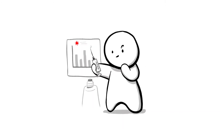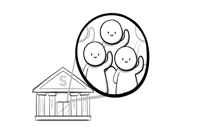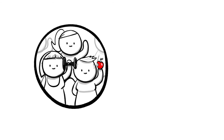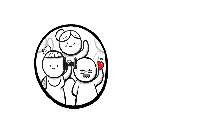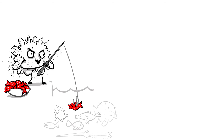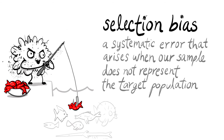Imagine you're testing a new vaccine to fight a deadly virus. You gather a sample of human volunteers from your local university. If they all happen to be healthy men in their twenties, then this could systematically skew the results. Maybe the vaccine is less effective in women or has side effects that only appear in older people with heart conditions. Because your sample is not representative of the wider population, your results will be limited at best. This type of error is called a selection bias, which arises when our sample does not represent the target population.